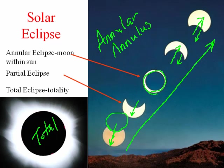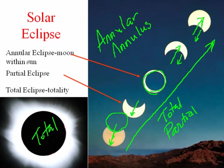The sun continues to rise and the moon in its orbit continues to move to the left. We get the whole event of the moon starting to cover the sun, then more of the sun, then a ring eclipse, then partial and partial again. A person in the umbra would see a total eclipse, except in this case the umbra is too far away from the Earth — so we see a ring eclipse. So there are three types: the annular, the total, and the partial solar eclipse.